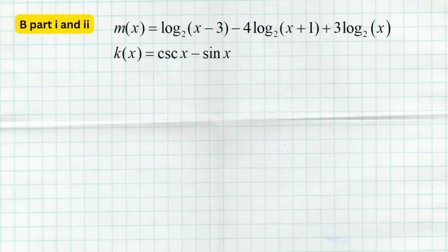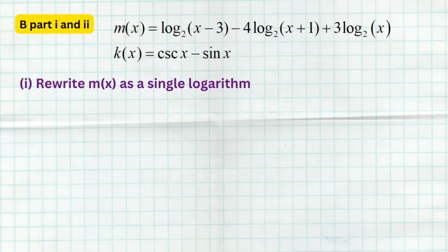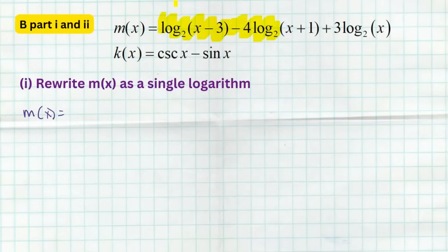Section B is going to offer you two more functions. Here we have function m(x) and function k(x), and we're going to do some simplification or manipulation. Part one asks you to rewrite m(x) as a single logarithm — log base 2 of something, but just one log with base 2. We have log base 2 of (x − 3) minus log base 2 of (x + 1), plus 3 times log base 2 of x.